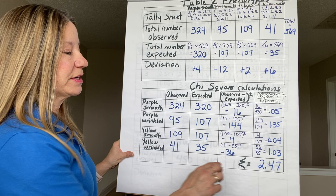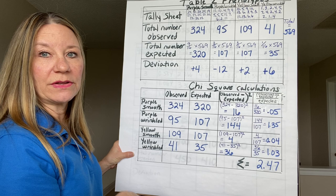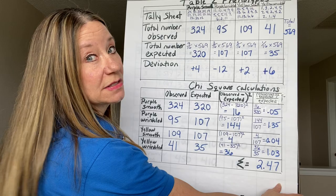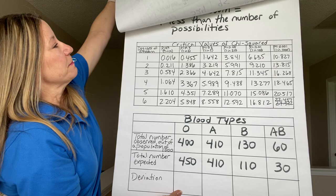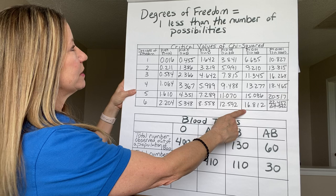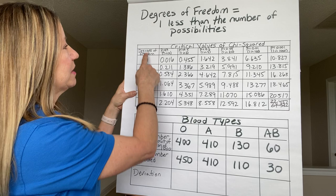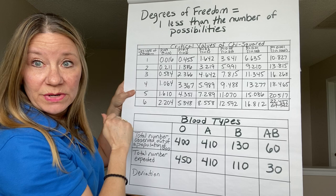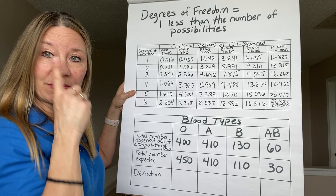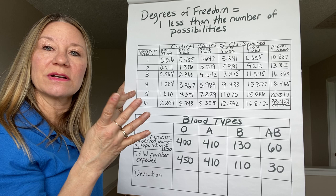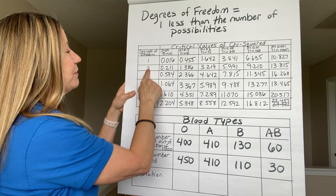When you look at the critical value, you have to compare it to a chi-square table. Before comparing, there's something you need to know: the degrees of freedom. Degrees of freedom is always one less than the number of possibilities. We had four possibilities: purple and smooth, purple and wrinkled, yellow and smooth, and yellow and wrinkled. So our degrees of freedom would be three.